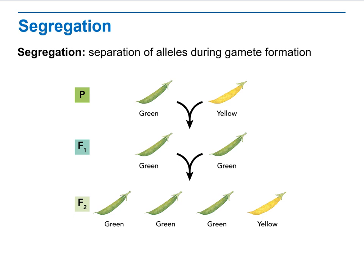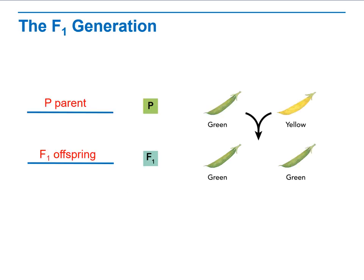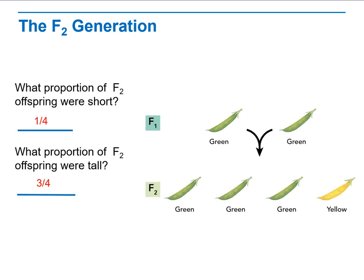For example, when he crossed green with yellow plants, the entire first generation was green, showing the dominant allele. But in the second generation, the yellow trait came back. We call the parents P, the first generation offspring F1, and the second generation F2. In the F2 generation, the proportion showing the recessive short trait was one out of four — 25% — while the dominant tall trait appeared in three out of four, or 75%, of the offspring.